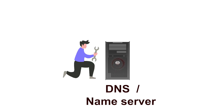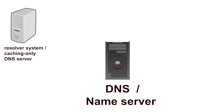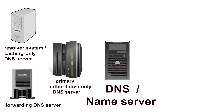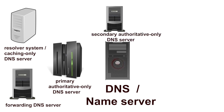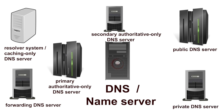The server on which you run the DNS service is called a DNS or name server. Based on how the DNS service is configured on it, it can be classified into six types: the resolver system or caching-only DNS server, forwarding DNS server, primary authoritative-only DNS server, secondary authoritative-only DNS server, public DNS server, and private DNS server. Let's understand the meaning of each type in detail.